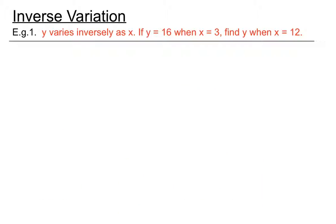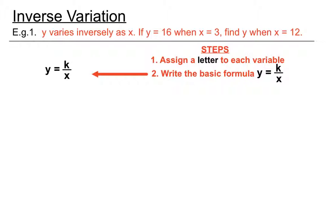Let's have a look at a basic example. Y varies inversely as X. If Y equals 16 when X equals 3, find Y when X equals 12. The steps involved: assign a letter to each variable. We're not going to be using that one because they've already given us X's and Y's to use. Write the basic formula, Y equals k on X.